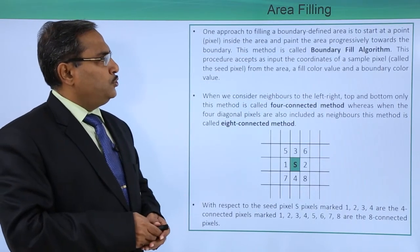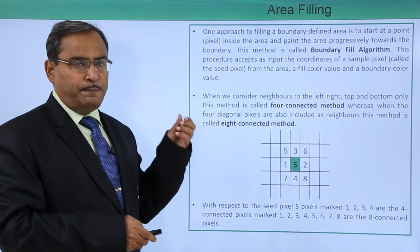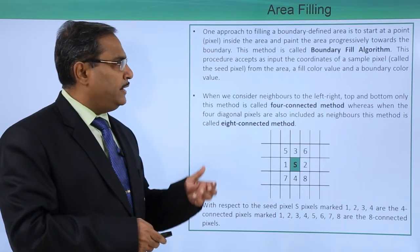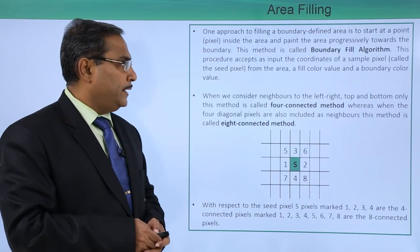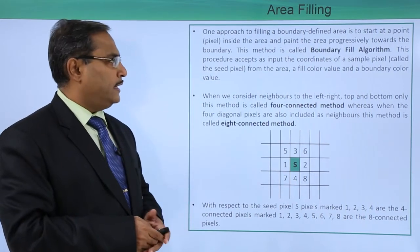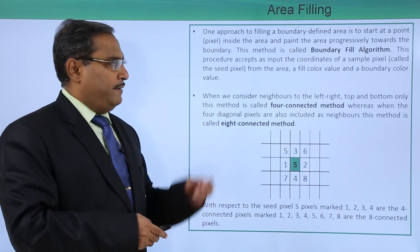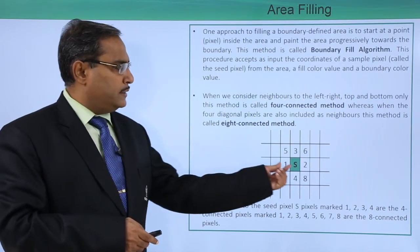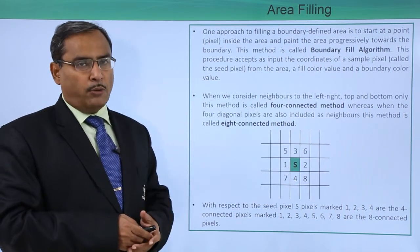One approach to filling a boundary defined area is to start at a pixel inside the area and paint the area progressively towards the boundary. This method is called the boundary fill algorithm. This procedure accepts as input the coordinates of a sample pixel, also called a seed pixel, from the area, a fill color value, and the boundary color value. We require one seed pixel, the fill color value, and also the boundary color value.